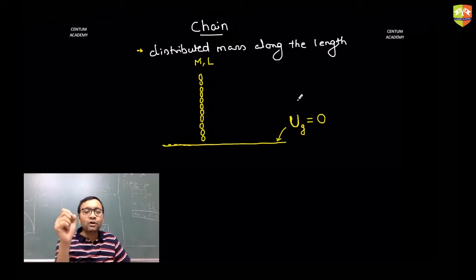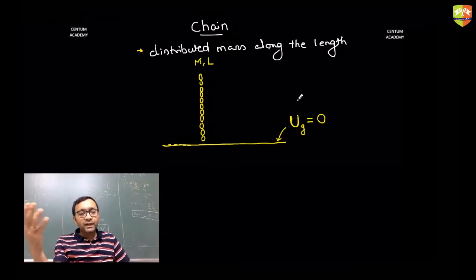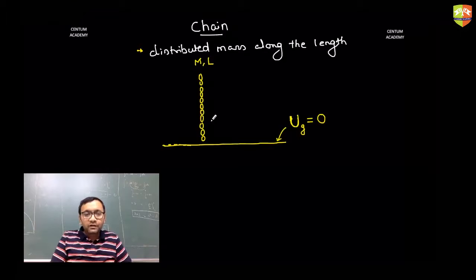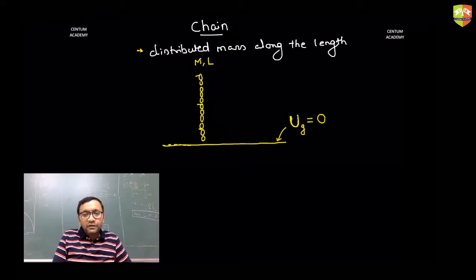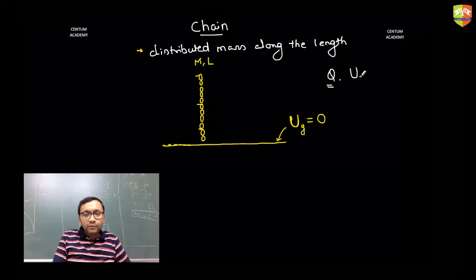Since the chain is not located at a particular point, when you write mgh as potential energy, you won't be sure what h to take. That is the reason we treat the chain as a special case. The question here is: find out the total gravitational potential energy U_g of the chain.